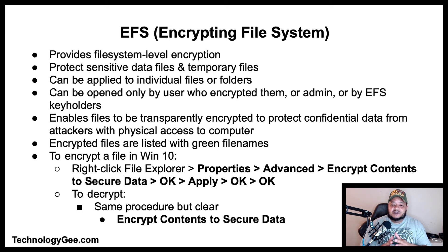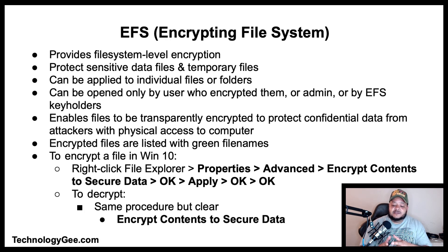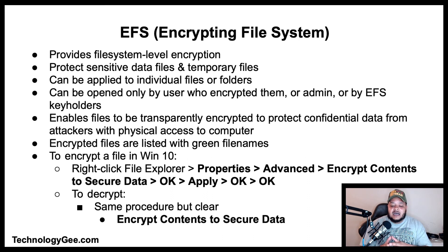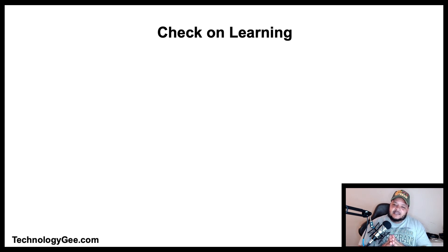The Encrypting File System (EFS) on Microsoft Windows is a feature introduced in version 3.0 of NTFS that provides file system-level encryption. EFS can be used to protect sensitive data files and temporary files, and can be applied to individual files or folders. EFS files can only be opened by the user who encrypted them, by an administrator, or by an EFS key holder. Files encrypted with EFS are listed with green file names in Windows Explorer. To encrypt a file in Windows 10, right-click in File Explorer, select Properties > Advanced > Encrypt contents to secure data, then click OK. To decrypt, follow the same steps but clear the encrypt contents option.